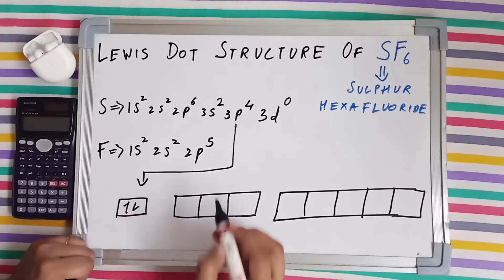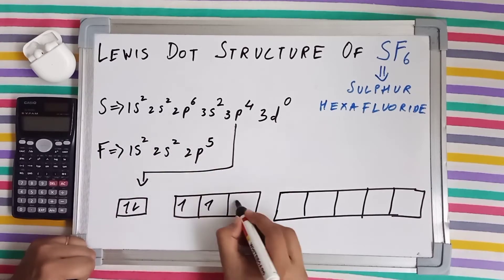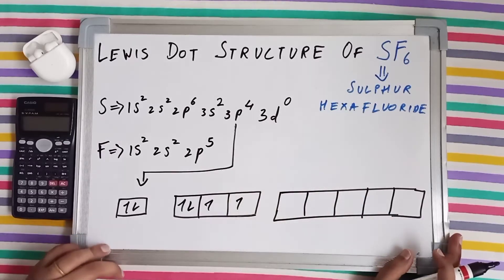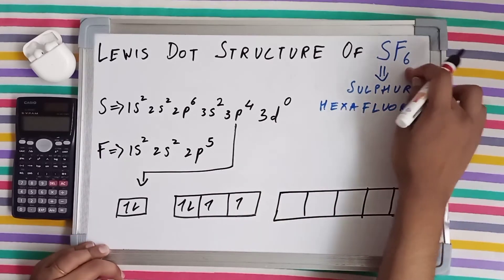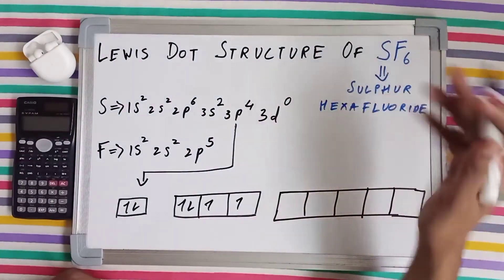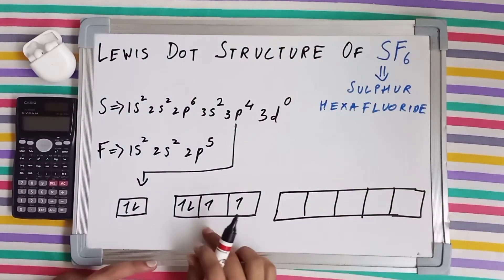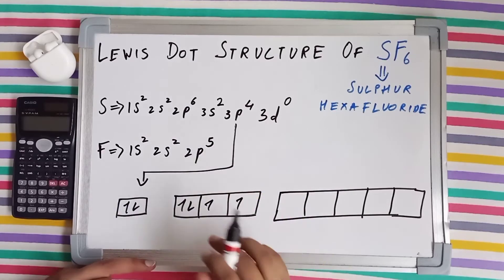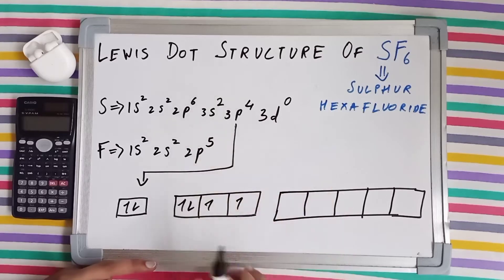3s has two electrons, 3p has four and 3d has nil. It is pretty evident that sulfur is going to make six bonds with fluorine. How is it going to be so? Because we are just having two unpaired electrons. So right now currently sulfur can make only two bonds.